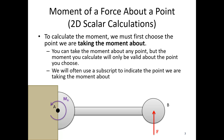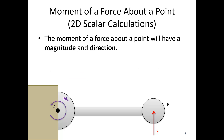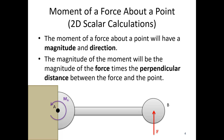In 2D, we're going to use a circular arrow to draw a moment. The moment of a force about a point is going to have both a magnitude and a direction. The magnitude of the moment will be the magnitude of the force times the perpendicular distance between the force and the point — so moment equals force times distance. That distance is the distance between point A and our force. We'll come back to that perpendicular distance in a second.